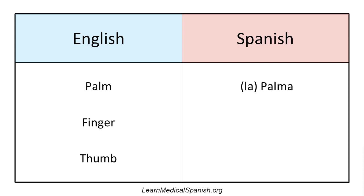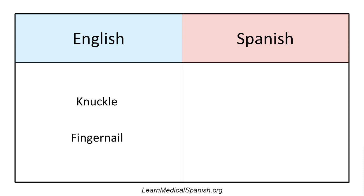Finger: el dedo. Thumb: el pulgar. El pulgar sounds really similar to the word for inch, which is pulgada, so it's easy to get those confused — it might take a little practice. But el pulgar is the thumb. Knuckle — this one is probably a little regional; they may use slightly different words in different places, but a common way to say it is: el nudillo.